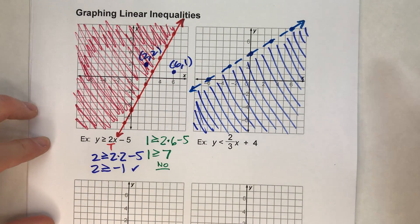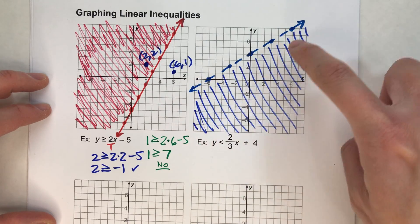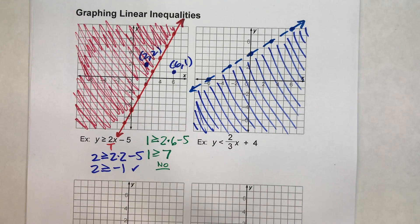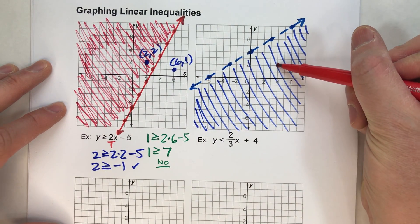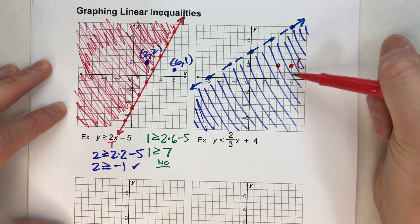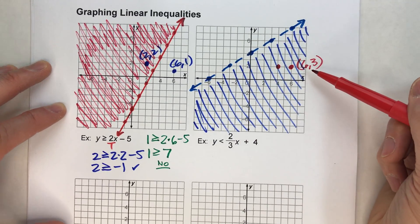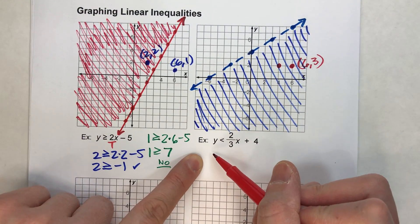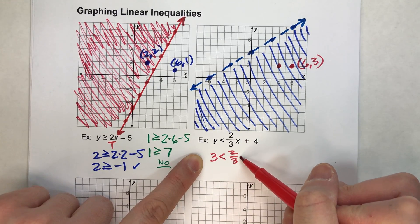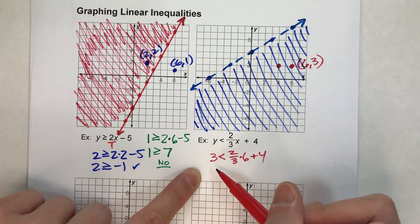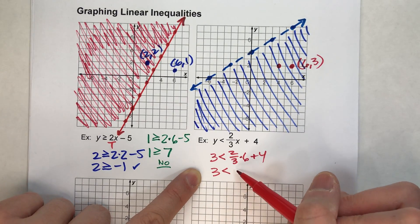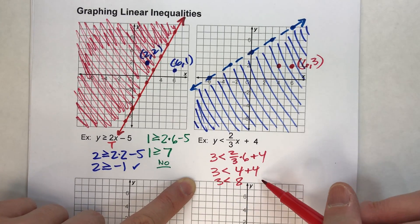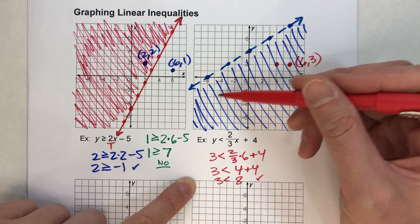That's what the graph of this inequality is going to look like — a dashed line for the boundary line, and anything below that line shaded. If we pick a point somewhere in this shaded region, we'll pick 6, 3, because we want it divisible by 3. If we use 6, 3 and put it into this, it should make a true statement. Y is 3, is less than 2 thirds times 6 plus 4. 2 thirds of 6 is 4, plus 4 is 8. Is 3 less than 8? Yeah, it is. So we know 6, 3 is part of our solution.